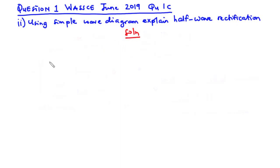When we talk about electrical rectification, it is the conversion from AC to DC. Before we explain half wave rectification, let's talk about AC waveform. An AC waveform is a waveform that takes a sinusoidal shape. So now let's draw the AC waveform.